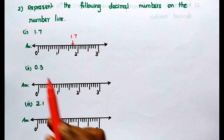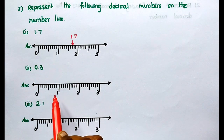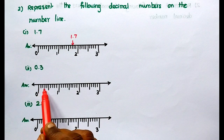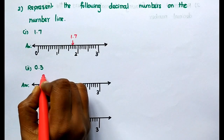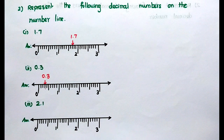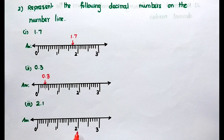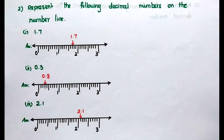Next one: 0.3. The whole number is 0 and the next number is 1. In between, 0.3 is there: 0.1, 0.2, 0.3 — so here is 0.3. Next one: 2.1. Here the whole number is 2, next number is 3, so in between 2.1 is there. Between 2 and 3, 2.1 is here. That is the answer.